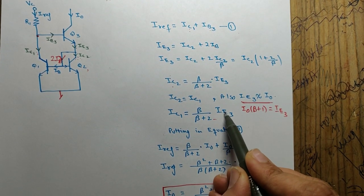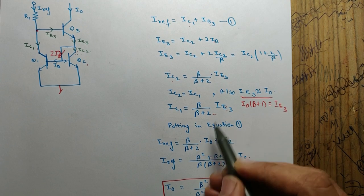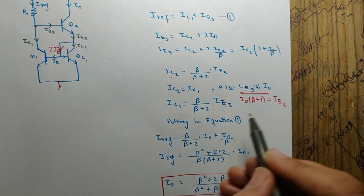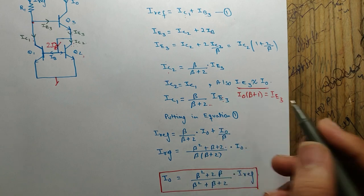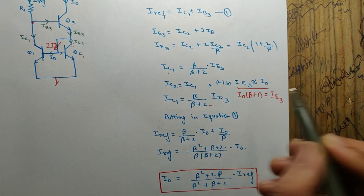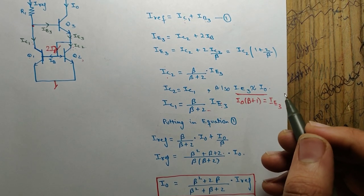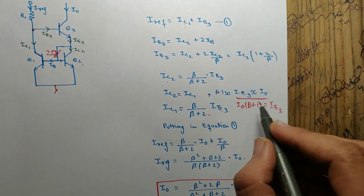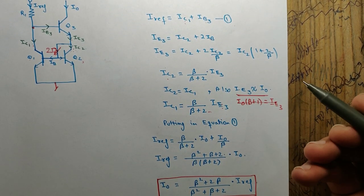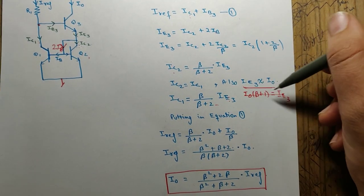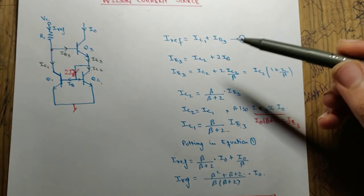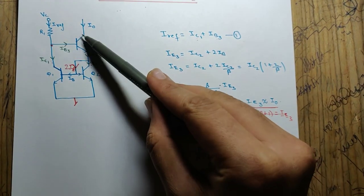So this becomes beta times (beta plus 1) into i0. But you can always avoid it because beta plus 1 is approximately equal to beta. So I haven't used this method, I have just used the approximation to derive the relation between i0 and i_reference for the Wilson Current Source.